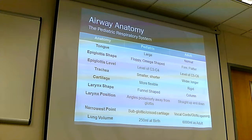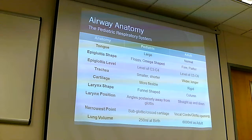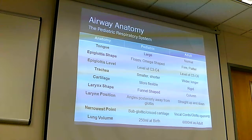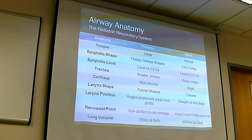Now, pediatric anatomy — kids are not little adults, they have real anatomical differences. Their tongues are proportionally bigger, their epiglottis is more omega-shaped, rounded, and floppy versus the firmer, flatter adult epiglottis. The epiglottis level is higher in kids, making visualization of the vocal cords more difficult. The trachea in a child is smaller and shorter; the adult trachea is wider and longer. Because the pediatric trachea is so short, it's very easy to accidentally intubate the right main stem or to accidentally extubate with small movements.